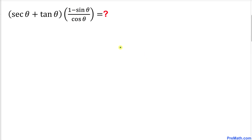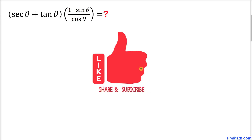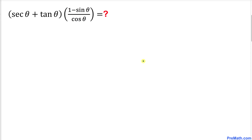Welcome to Pre-Math. In this video tutorial we have this trigonometric problem: (secant θ + tangent θ) times (1 minus sine θ) divided by cosine θ. We are going to multiply and simplify these identities. Please don't forget to give a thumbs up and subscribe. Let's go ahead and get started with the solution. The first thing we are going to do is look at the left-hand side of this equation.